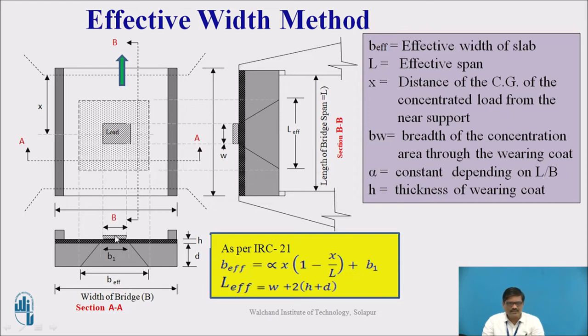This particular load of width B will get dispersed through the depth of the slab. The wearing coat thickness is shown by small h. The depth of the slab is shown by small d. And after the dispersion, we get a specific width that we call B Effective.